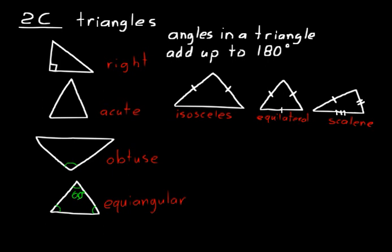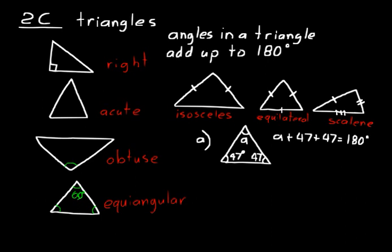Now that you know about triangles in terms of angles and sides, let's do some practice problems. In practice problem A, you're given a triangle where two of the angles measure 47 degrees. To find angle A at the top, remember that angles in a triangle add up to 180 degrees. So: A plus 47 plus 47 equals 180 degrees. Simplifying: A plus 94 equals 180 degrees.